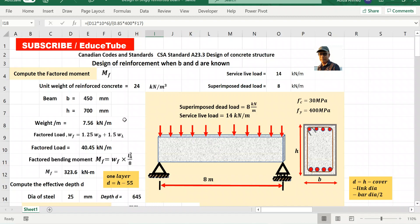So first we will compute the factored moment MF. So what is needed first? We need to find the unit weight of reinforced concrete. It is 24. Beam dimension already I discussed. So I have to find this beam weight per meter. It is 7.56 kilonewton per meter. Actually I have used this excel cell reference to find this.